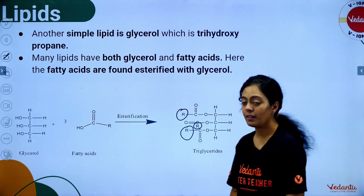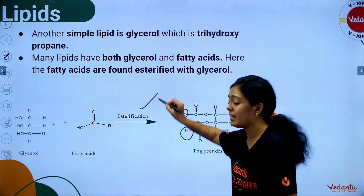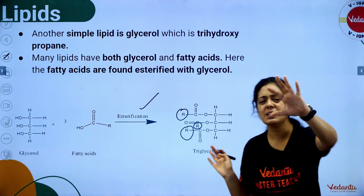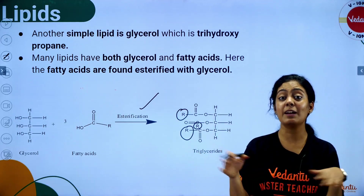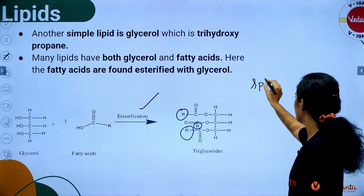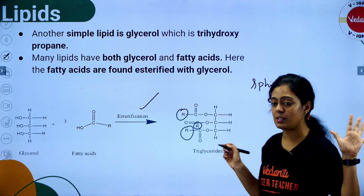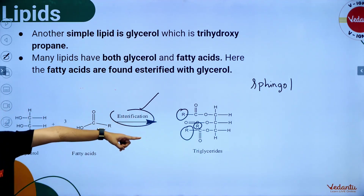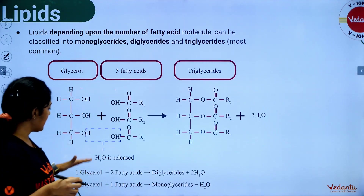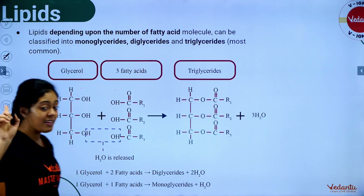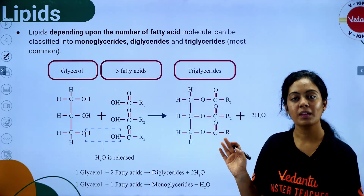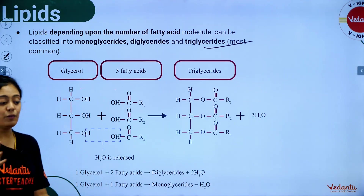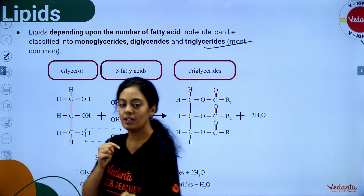The kind of reaction happening is esterification. The most simple alcohol is glycerol; another type of alcohol is sphingol. In esterification, water molecules are removed. This is how monoglyceride, diglyceride, and triglyceride are formed. On a food packet, you can see saturated and unsaturated listed.